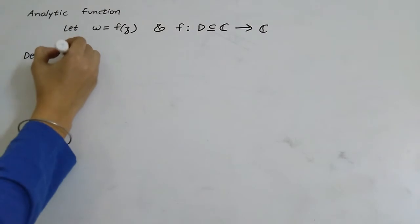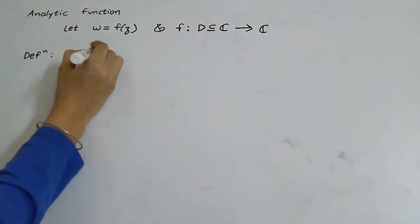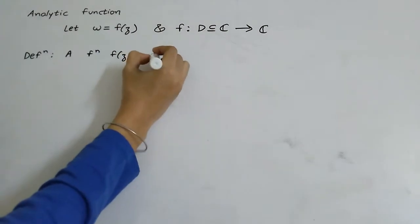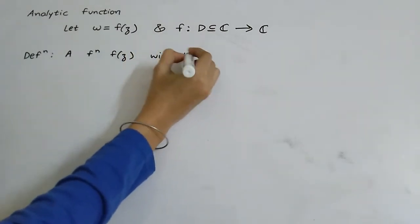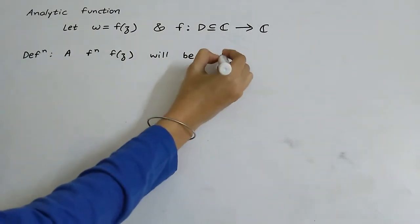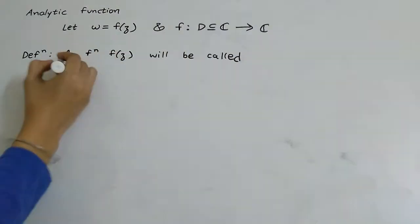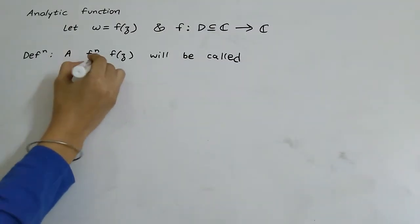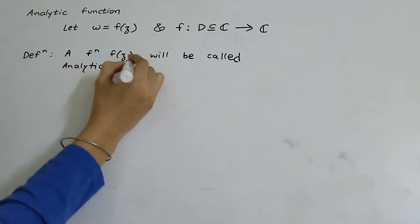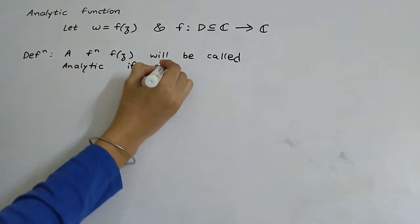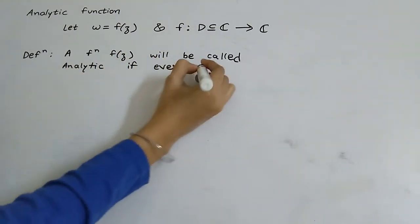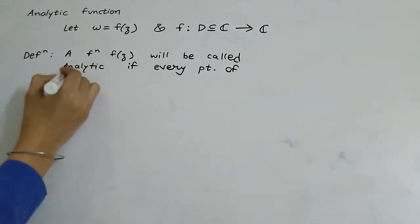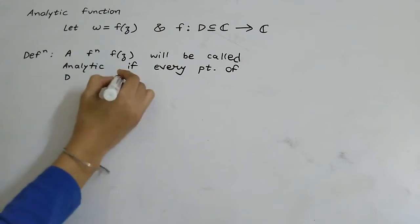So a function f(z) will be called analytic if every point of D is a regular point.